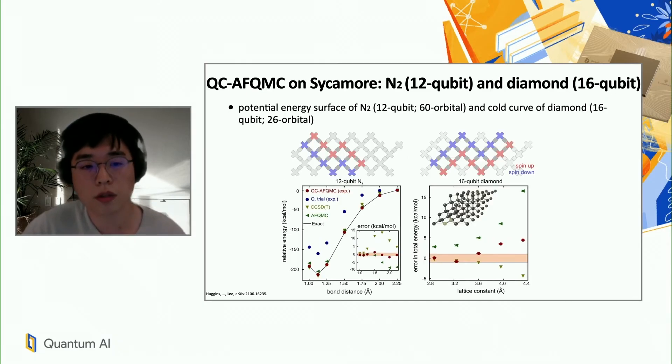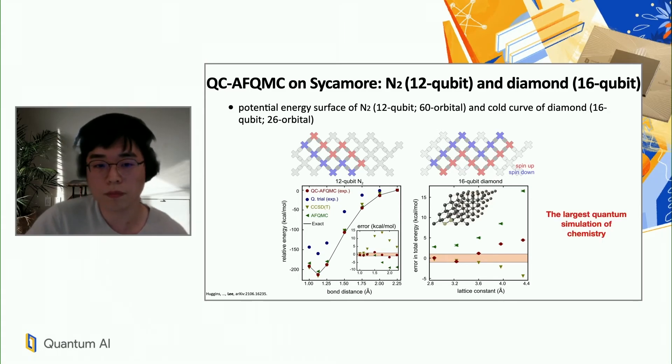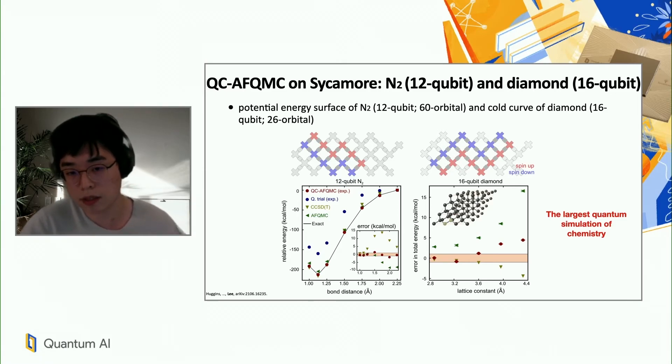In the interest of time, I would like to actually skip these even larger chemical examples. But just to give you some flavors of them, we did N2 bond dissociation process, that is actually a standard test for strong correlation methods in classical quantum chemistry. And this one involves 12 qubits and 60 orbitals. And we also obtained a cohesive curve of diamond, so solid diamond, which included 16 qubit and 26 orbital. But the point I would like to emphasize here is that in the case of this 16 qubit diamond, this is really the largest quantum simulation of chemistry to date. And while achieving competitive accuracy to what is classically possible, such as CCSD(T) and AFQMC with classically scalable trial wave function.